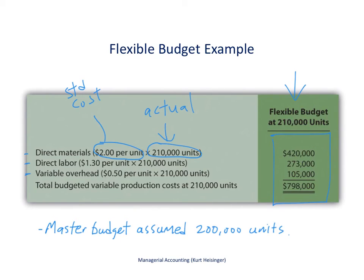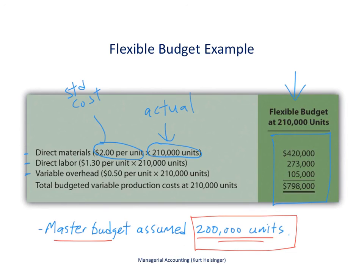As mentioned previously, the master budget assumed we were going to produce and sell 200,000 units — that's before the fact. Actual sales are almost always going to be different than budgeted sales. It turns out our actual sales and production was higher. It wouldn't be fair to evaluate our production personnel against 200,000 units if we actually produced and sold 210,000 units. So we modify the budget to reflect what we expected to see in production costs with actual production.